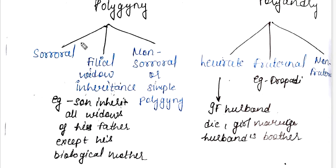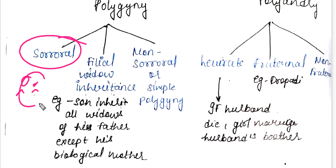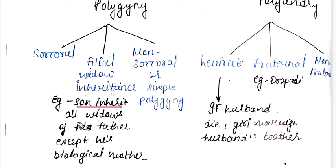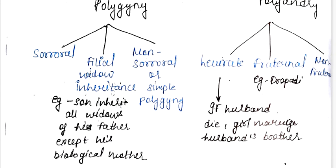Sororal means all the daughters. The subtypes are sororal, filial, widow inheritance. Widow inheritance means the son inherits all the widows of his father, except his biological mother.